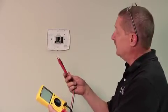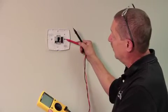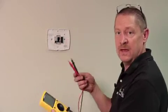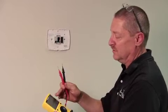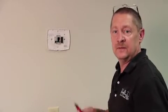I go from R to G, R to Y, R to O. As I jumper each one of those on, it's going to give me a reading of the amp draw of that circuit.